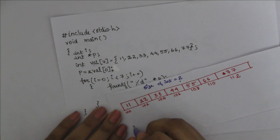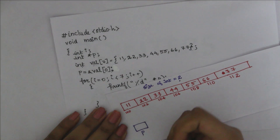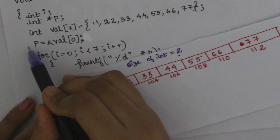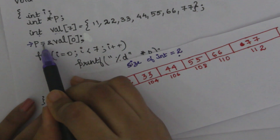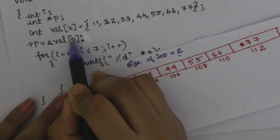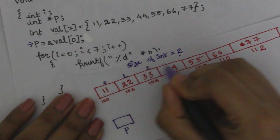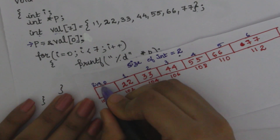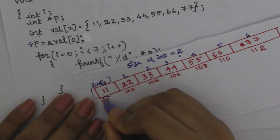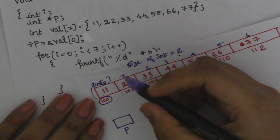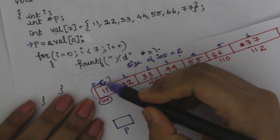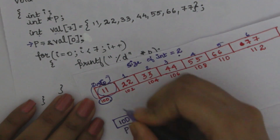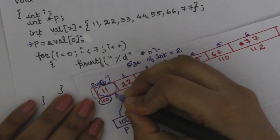Now I will show you a pointer P — it will point to a location. P is equal to ampersand val[0]. Here is the 0th index, 1st index, 2nd index. The value of val[0] is the address of the first element. So P is equal to 100, which is that address.